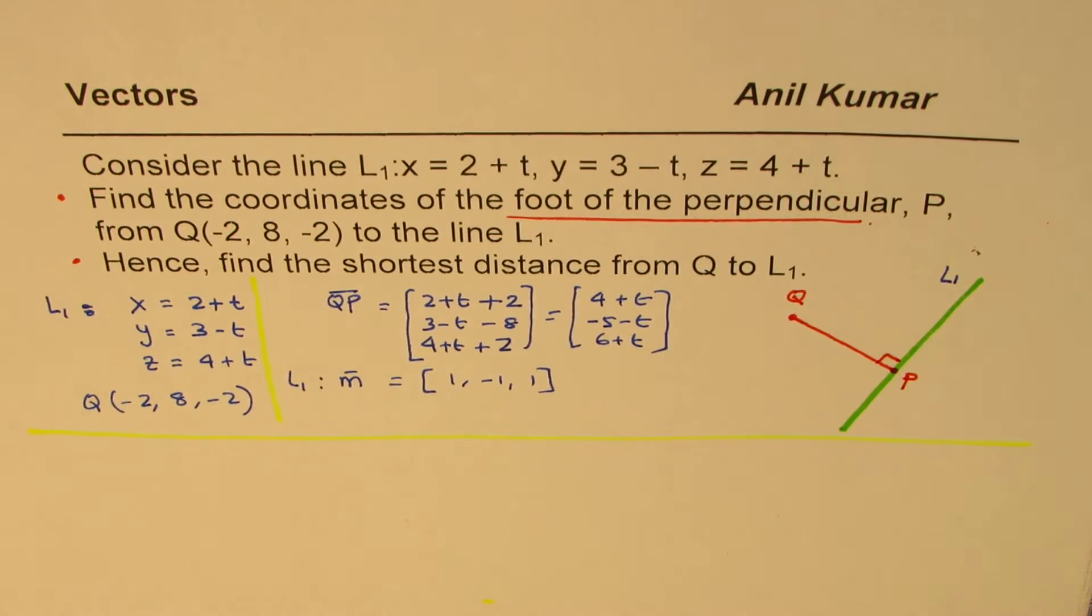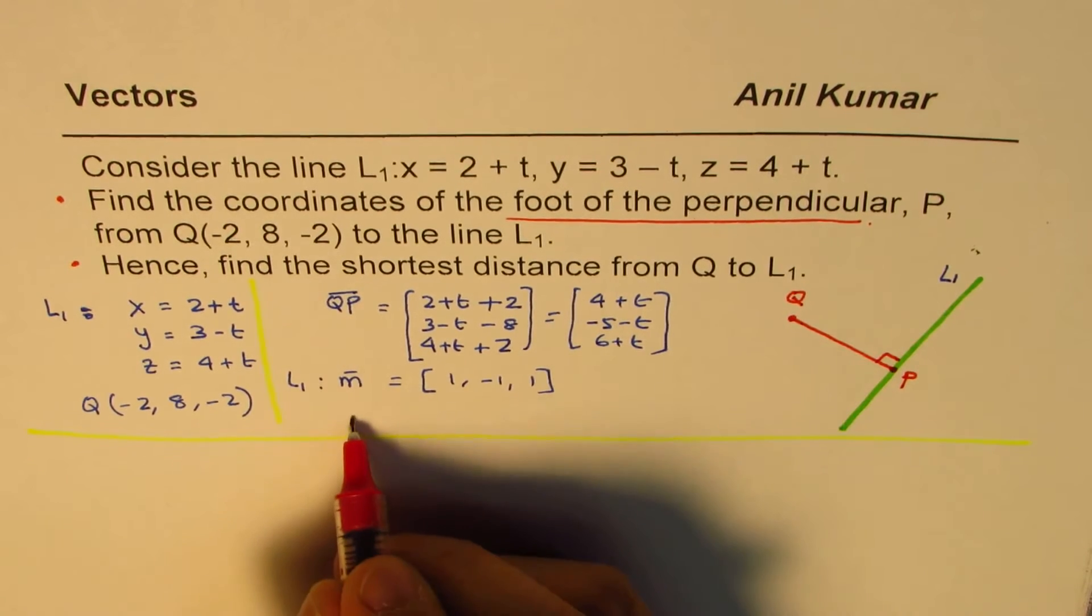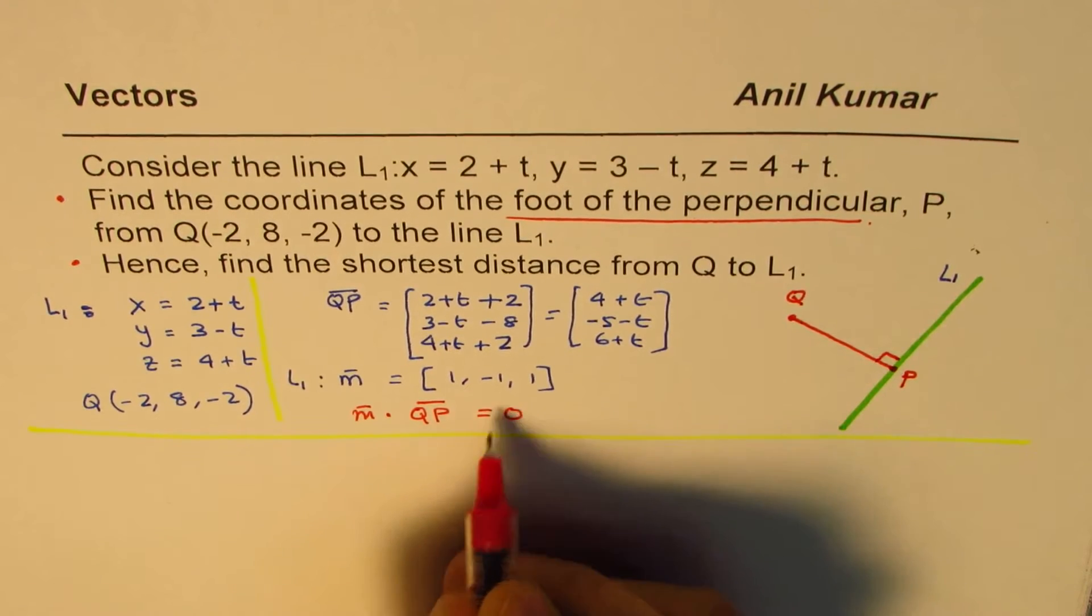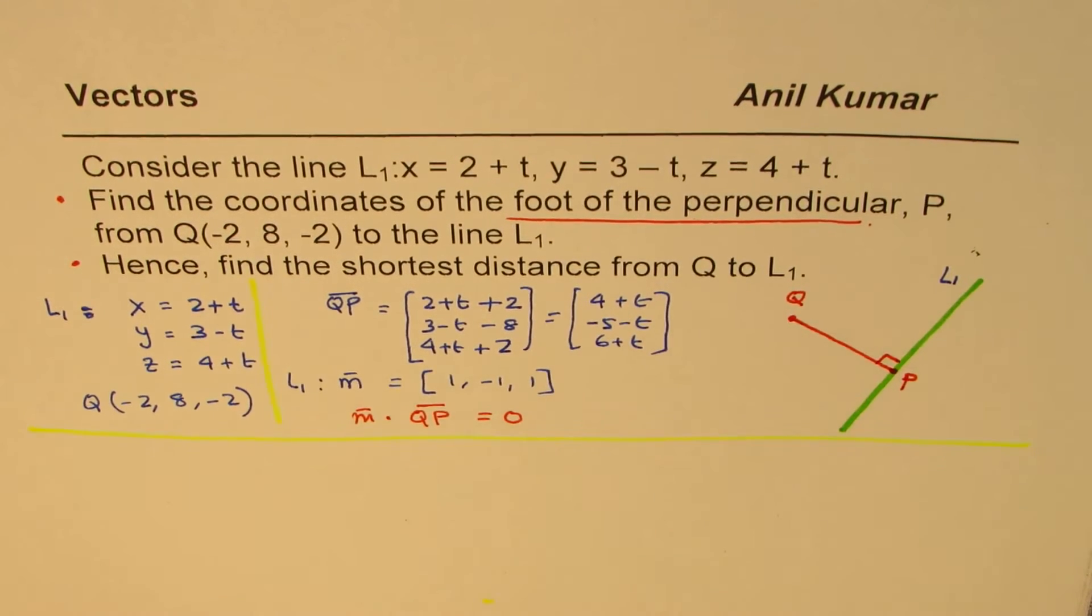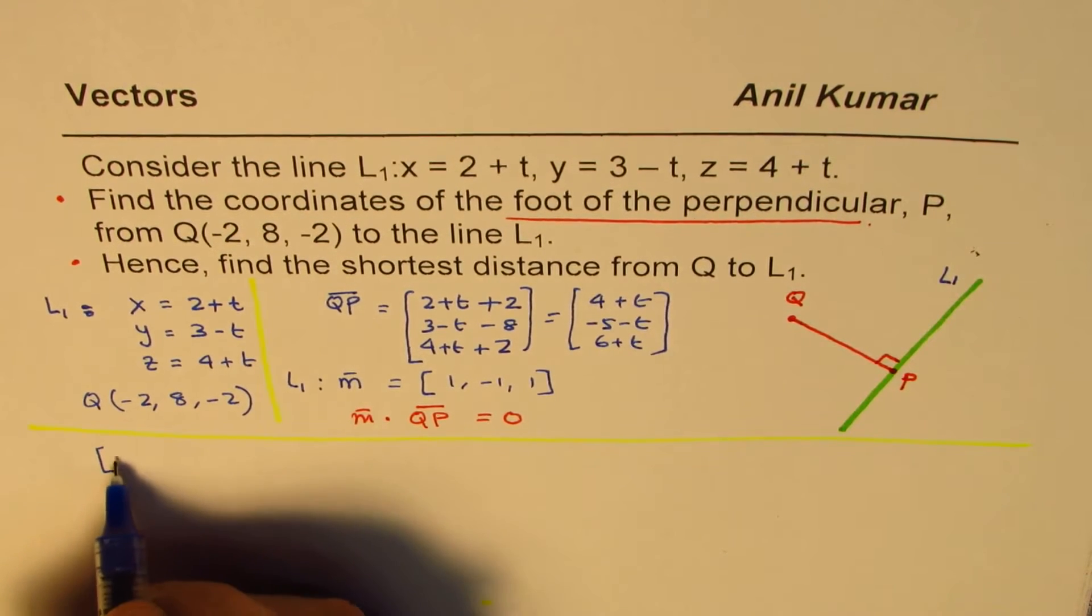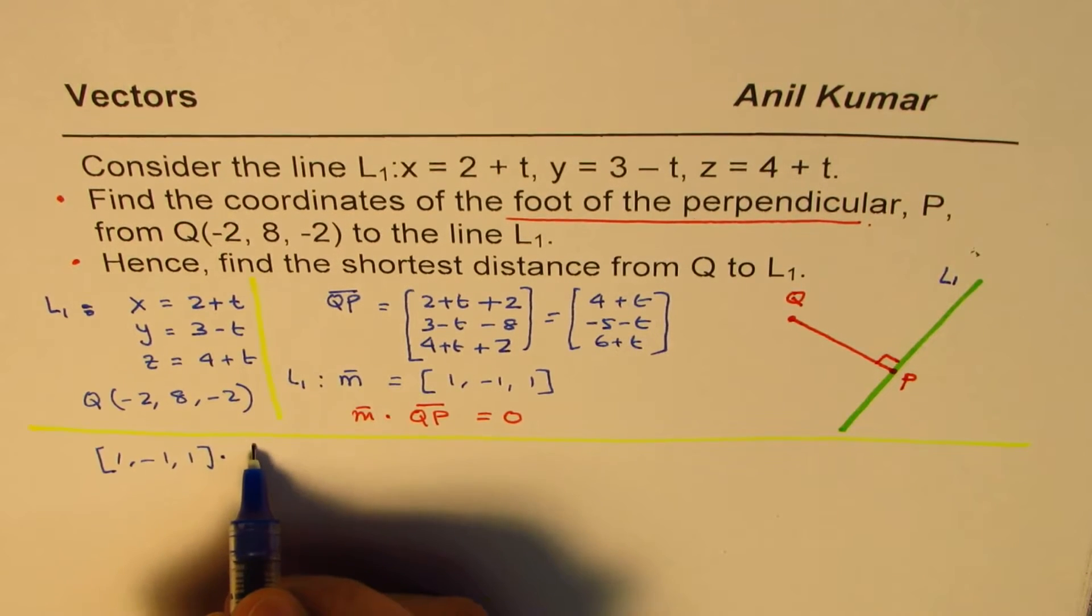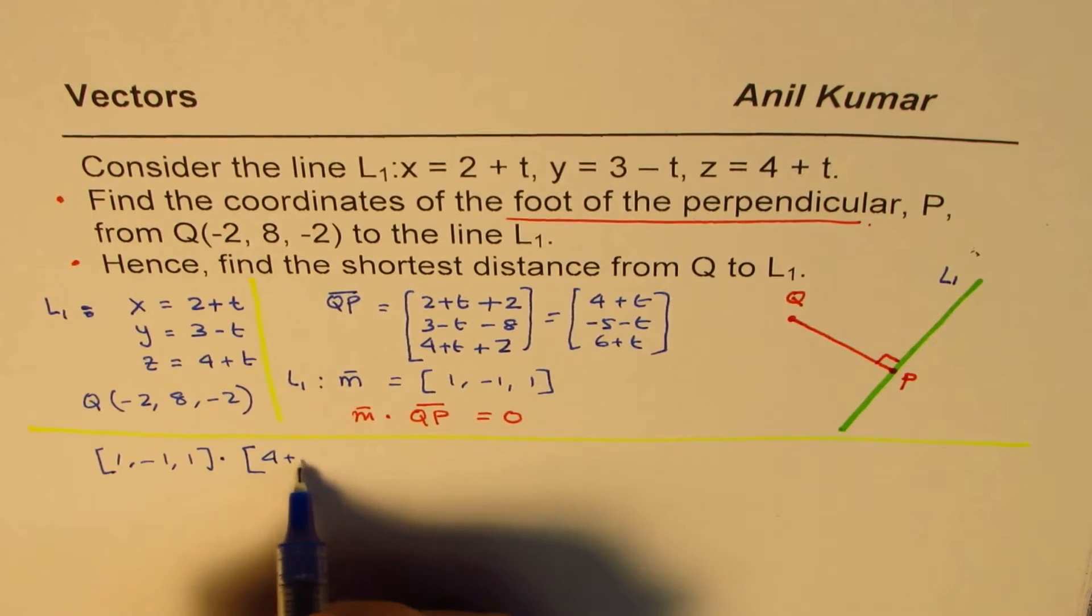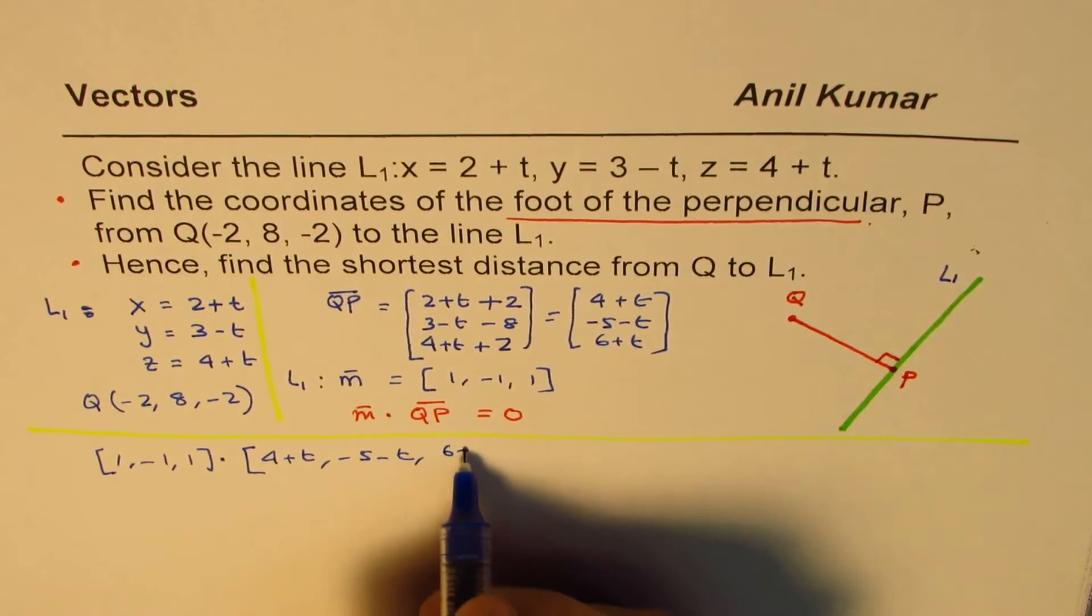And to solve this question, we need to figure out the dot product of M and QP. That should be equal to 0. That will help us to find the value of t. So let's do the dot product now. M dot QP, we have (1, -1, 1) dot (4 plus t, -5 minus t, 6 plus t).